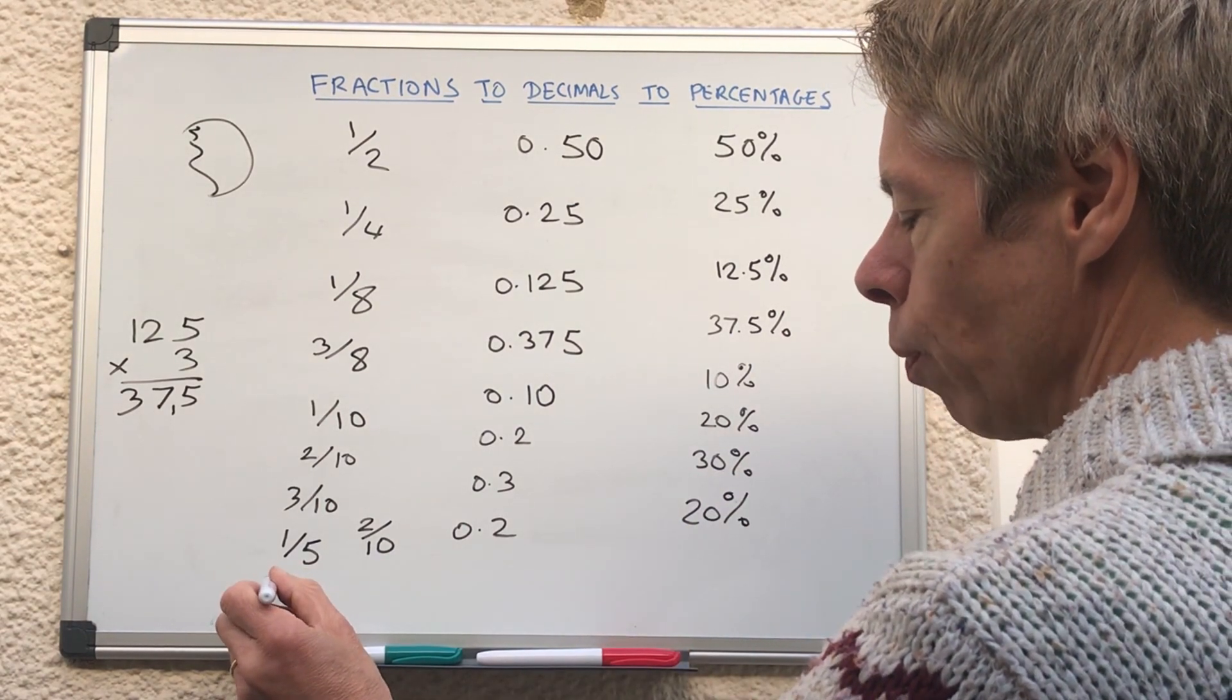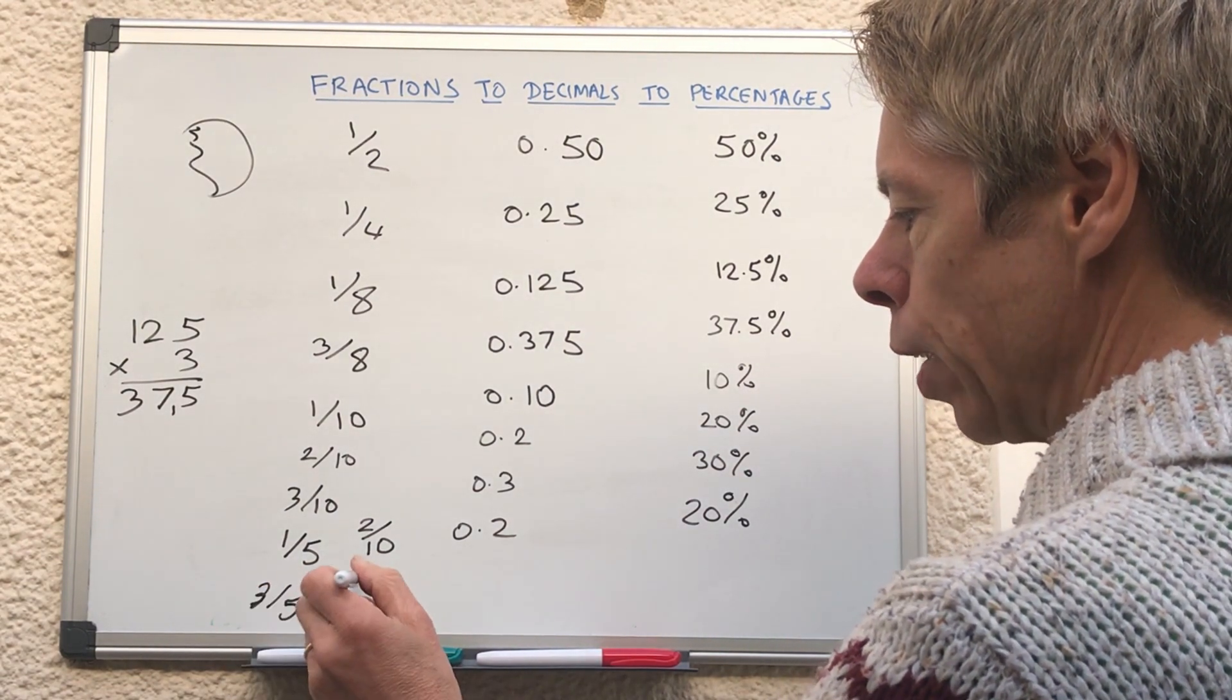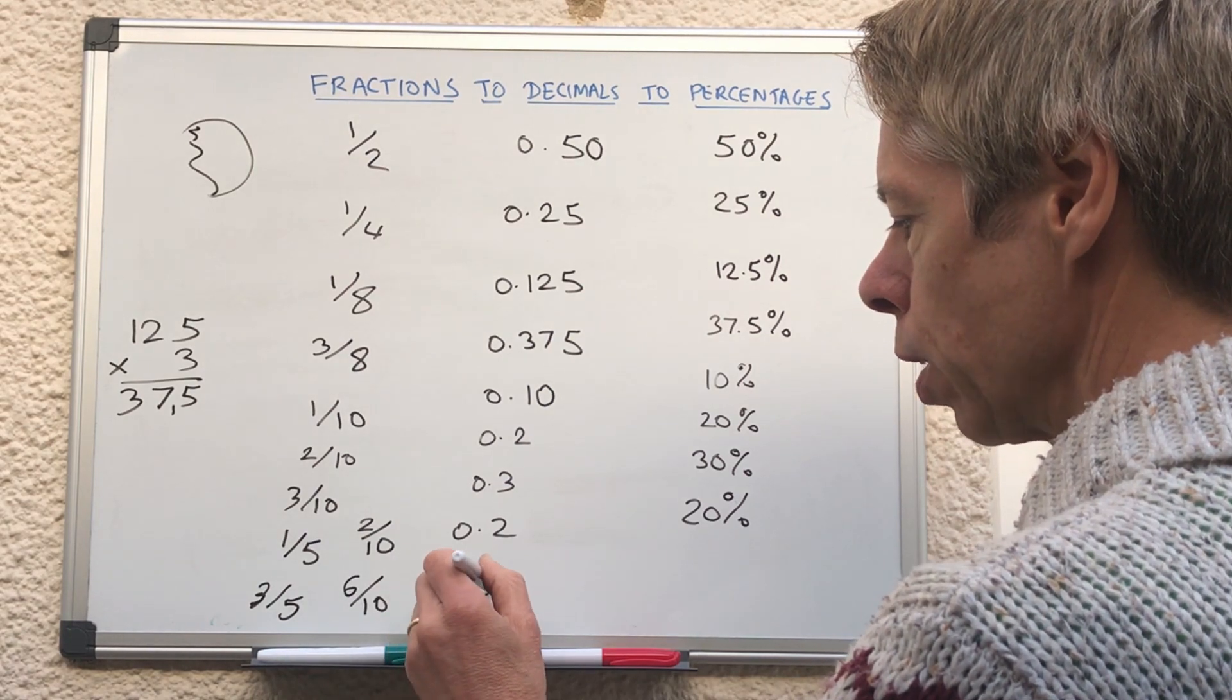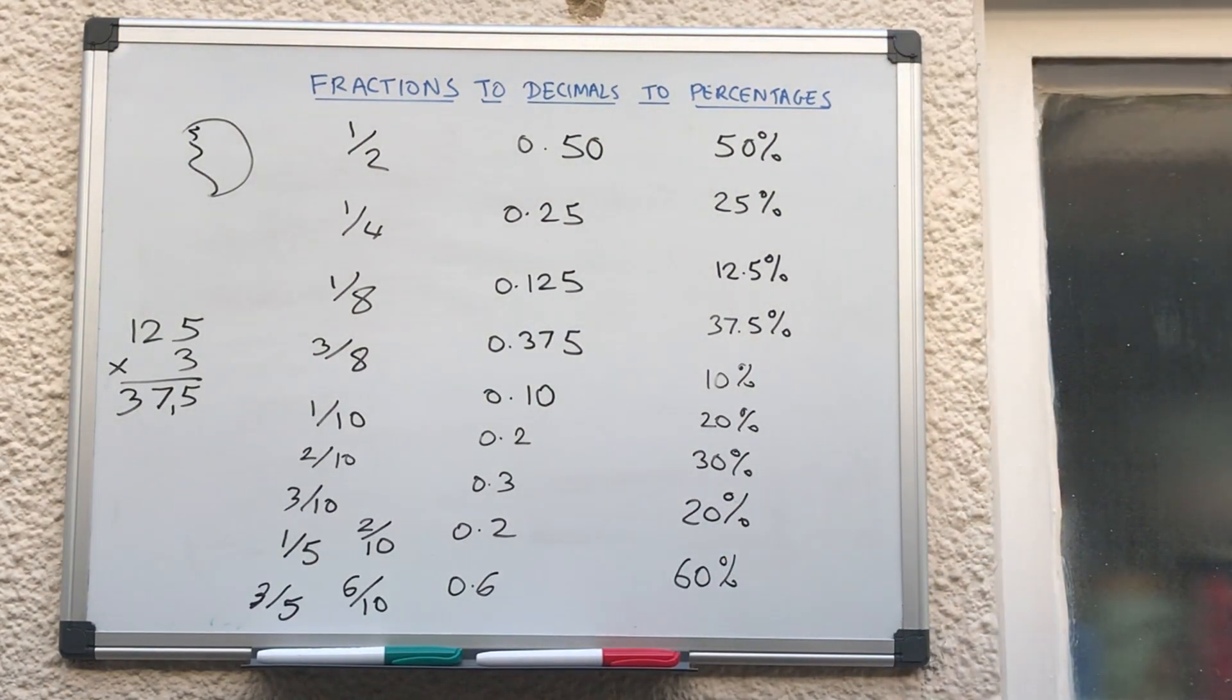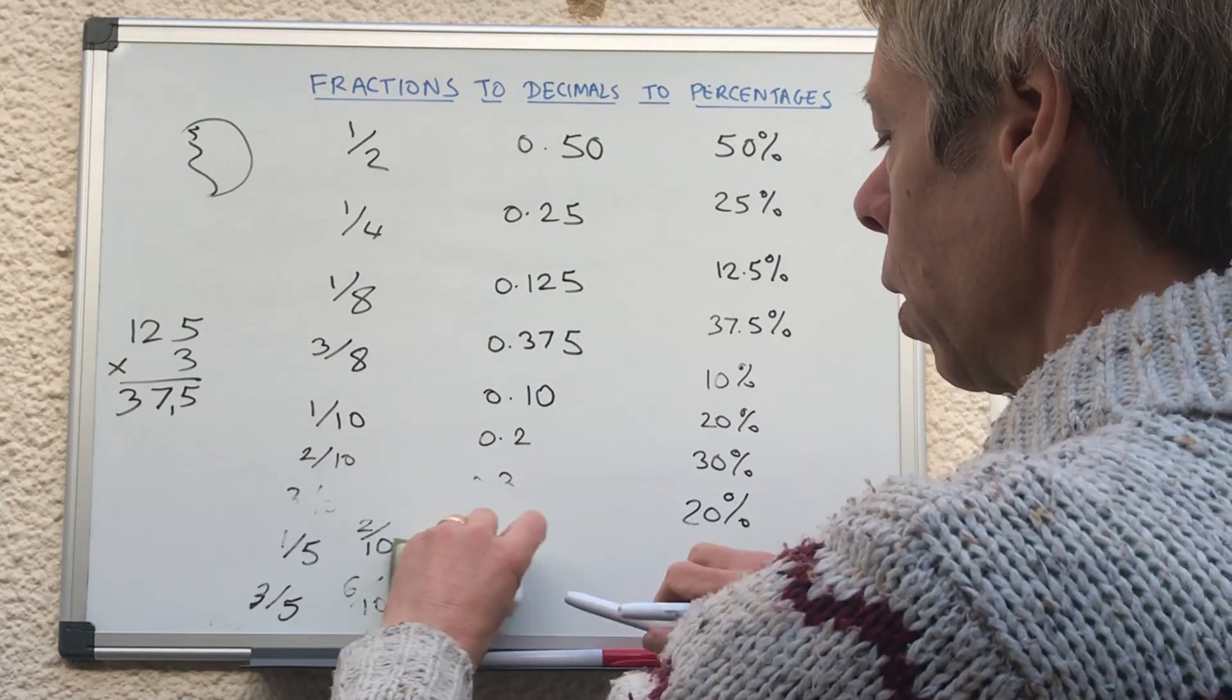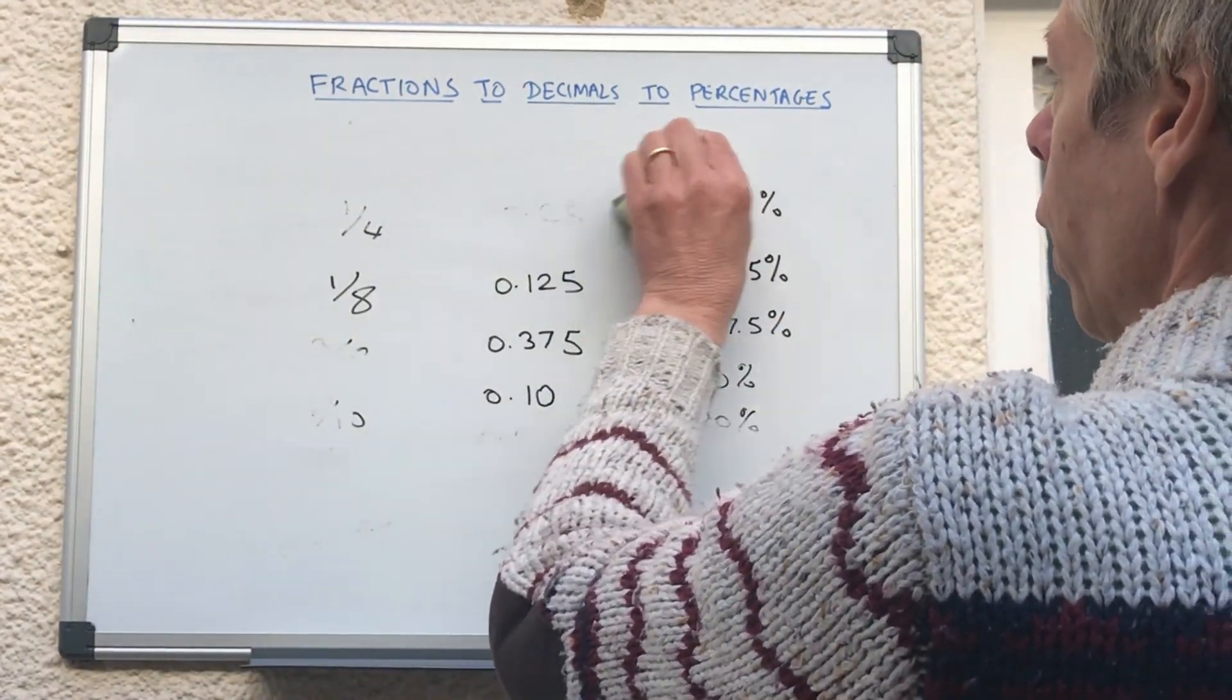Obviously, if we had something like three fifths, we double the three to get six, so that is six tenths, which is 0.6, which is 60%. Right, filled up the board, time is marching on, so it's time for the test, so make sure you've got your paper and pen or pencil ready. And I'll make sure I don't flip any more pens onto the floor while I'm rubbing these out.